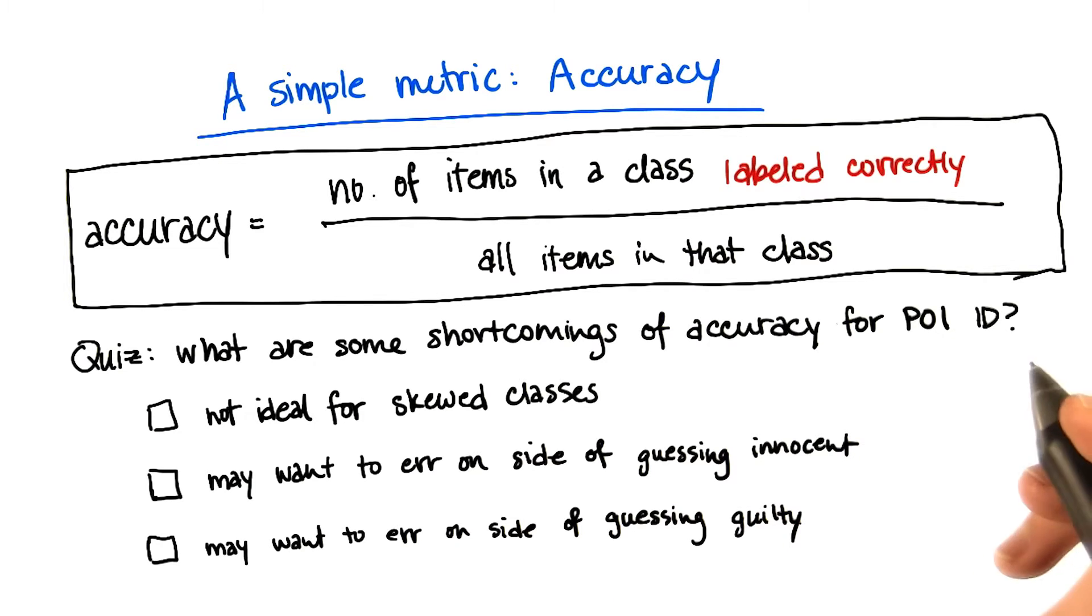So let's think about what those might be in the case where we want to identify persons of interest in the Enron dataset. So here are a few possible shortcomings, and you check all of the ones that sound like they could be problems in our case.